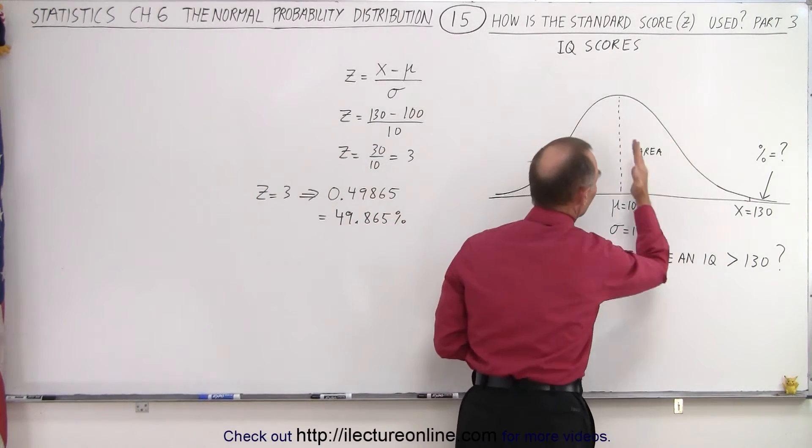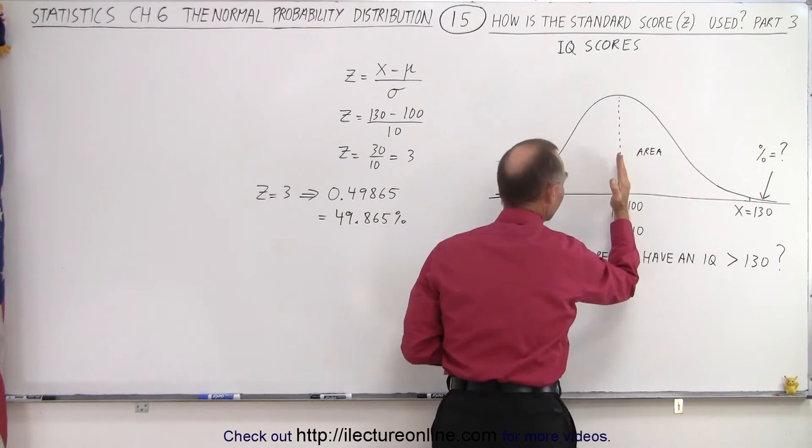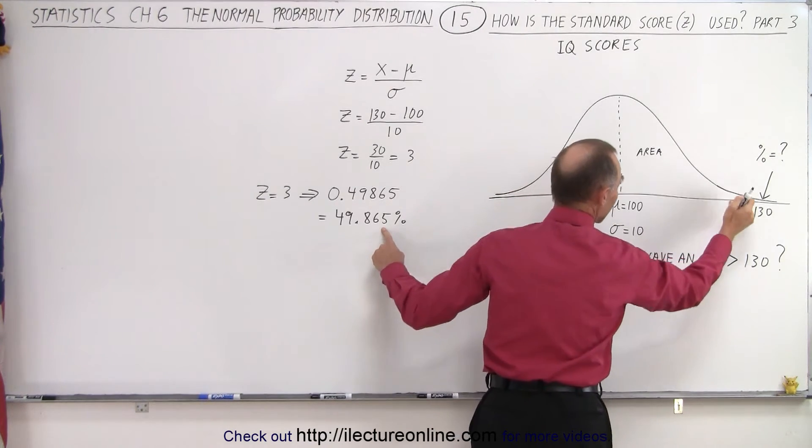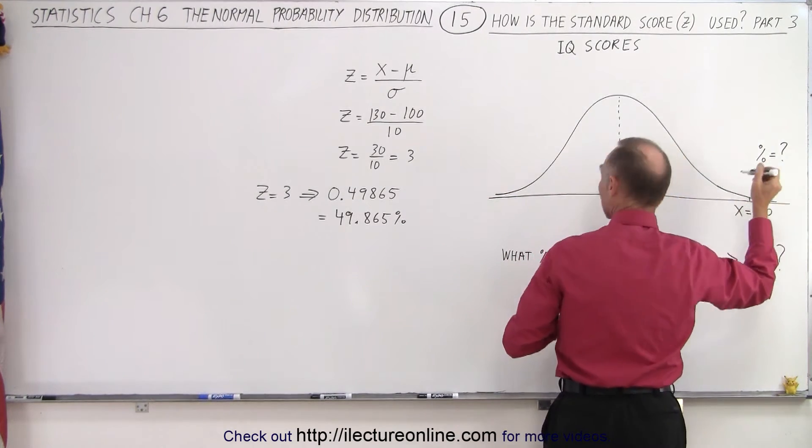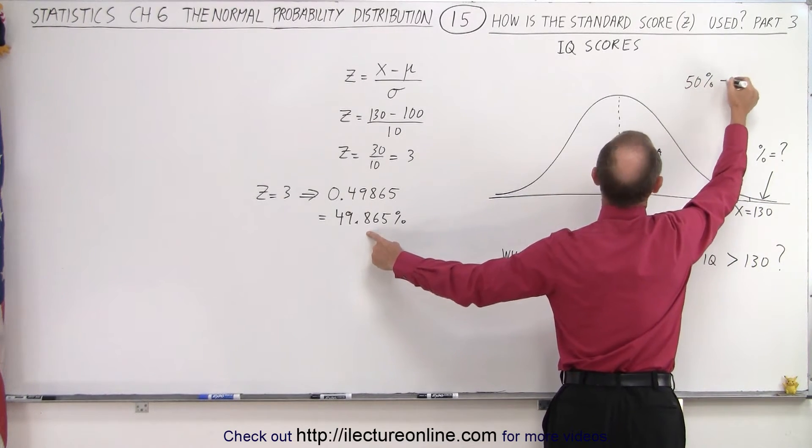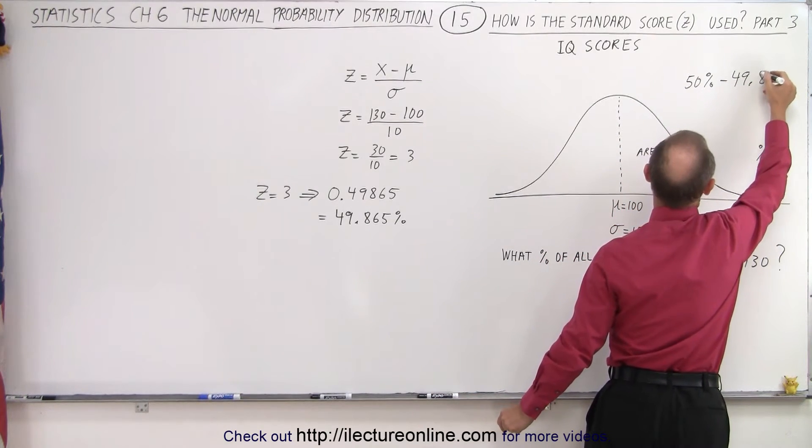Now, of course, the whole area is 100%, 50% on the left, 50% on the right. Of that 50% on the right, 49.865% lies between here and here, which means over here this percentage would be 50% minus 49.865%.